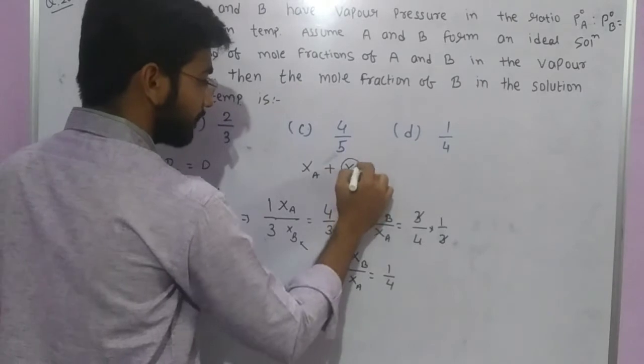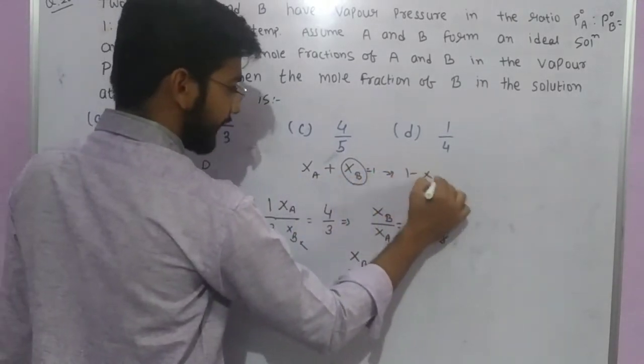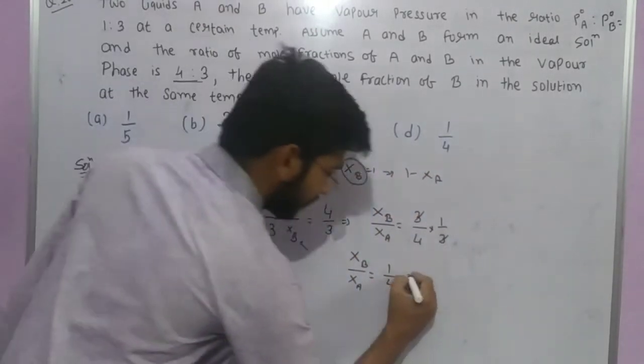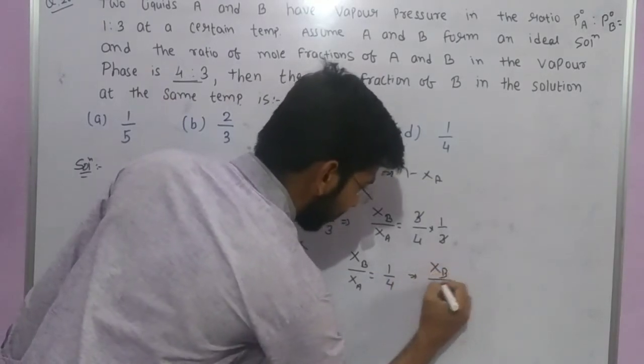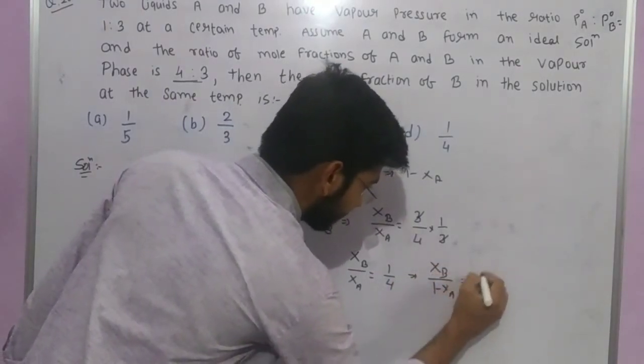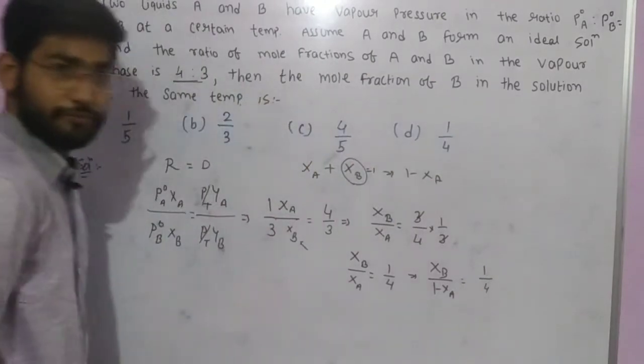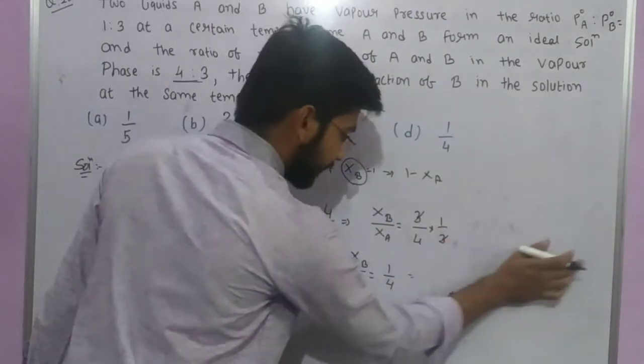To calculate X B, let me rearrange this. X B upon 1 minus X A is equal to 1 upon 4. Or let me do this more simply.